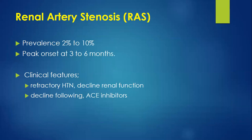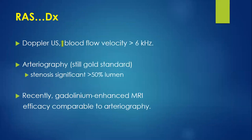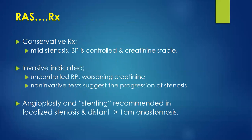Renal artery stenosis: prevalence 2 to 10%, peak onset 3 to 6 months. Clinical features: refractory hypertension and declining renal function. If ACE inhibitor is started, renal function may decline further. Doppler shows increased blood flow velocity over 6 kHz. Angiography remains the gold standard, showing significant stenosis of more than 50% luminal occlusion. Gadolinium-enhanced MRI has comparable efficacy to angiography.